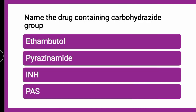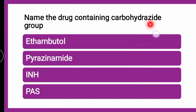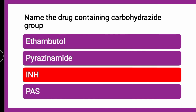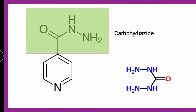The next question is: Name the drug containing a carbohydrazide group. Whether it is ethambutol, pyrazinamide, INH, or PAS? The correct answer is INH. The antitubercular drug which contains a carbohydrazide group is INH (isoniazid). The carbohydrazide group is shown in the structure, and it also contains a pyridine heterocycle.